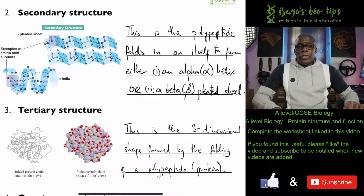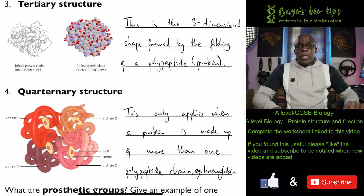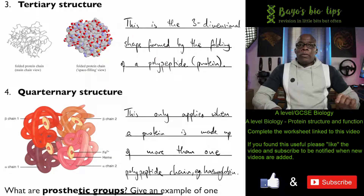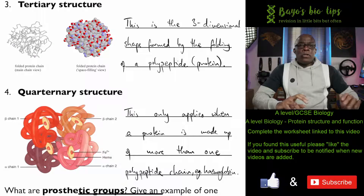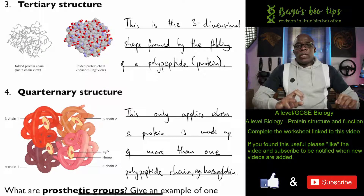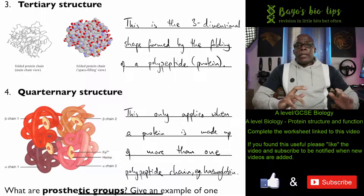The next level up is the tertiary structure — the three-dimensional shape formed by the folding of the polypeptide chain. Broadly speaking, you end up with either a fibrous protein, which looks roughly linear, or a globular protein, which looks almost ball-shaped. The quaternary structure only applies to proteins made up of more than one polypeptide chain — two or more. An example is hemoglobin, which is made up of four polypeptide chains. Anything with just one polypeptide chain cannot have a quaternary structure — it stops at the tertiary structure stage.